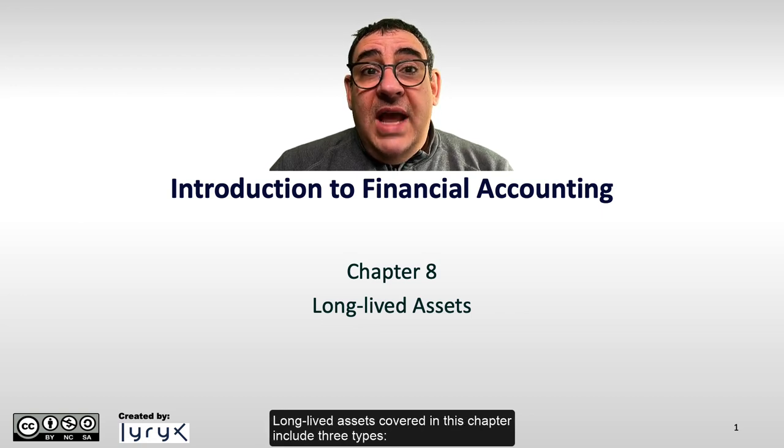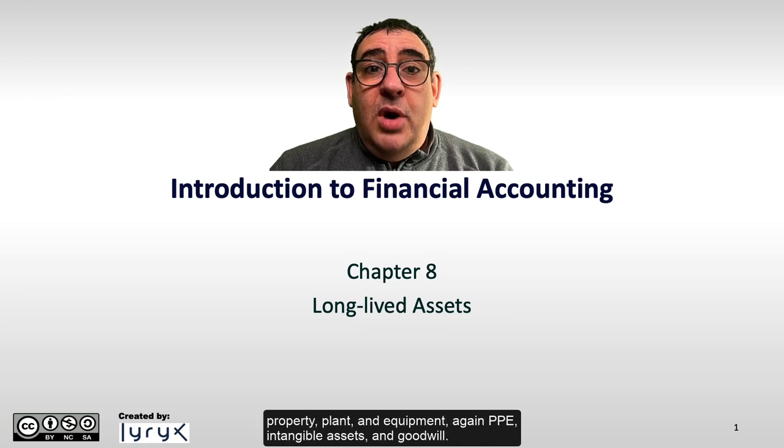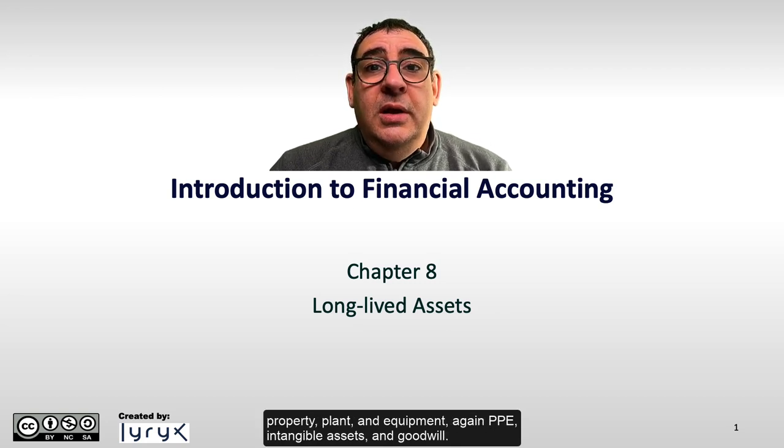Long-lived assets covered in this chapter include three types: property, plant, and equipment — again PPE — intangible assets, and goodwill.